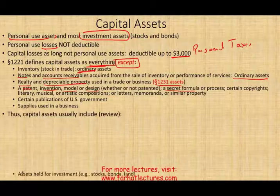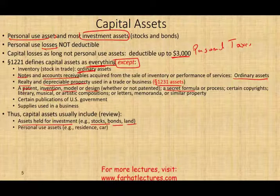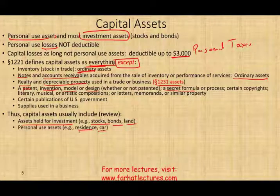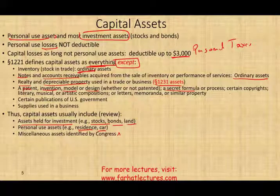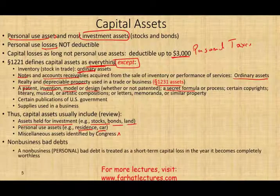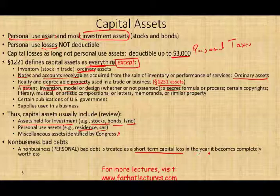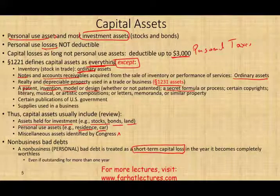To review, capital assets include assets held for investment such as stocks and bonds, land held for investment purposes, and personal use assets like a residence or car. One more important rule: a non-business bad debt — a personal bad debt — is treated as a short-term capital loss in the year it becomes completely worthless. Regardless of how long you held the debt, it's always short-term capital loss. So if you lend someone money and they don't pay you back, you have a short-term capital loss.